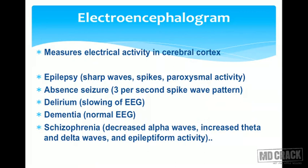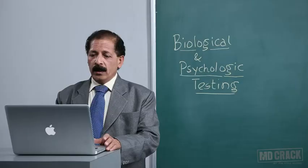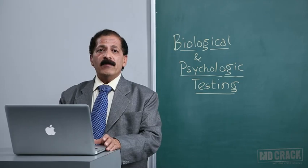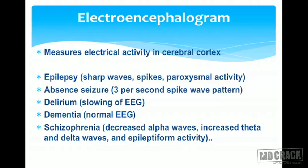Next we move on to electroencephalogram, or EEG, which measures electrical activity in the cerebral cortex. In various types of epilepsy, we get sharp waves, spikes, and paroxysmal activity. In absence seizure — petit mal epilepsy — the typical feature is three-per-second spike and wave pattern. When the patient is in delirium, EEG waves show slowing due to clouding of consciousness. In patients with dementia, there is a normal EEG, so EEG can differentiate between delirium and dementia. In schizophrenia, there is decreased alpha waves, increased theta and delta waves, and there may be epileptiform activity on EEG.